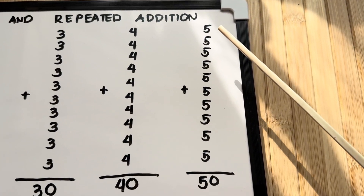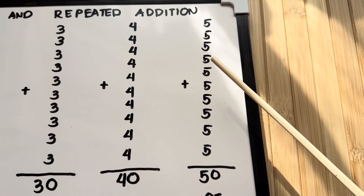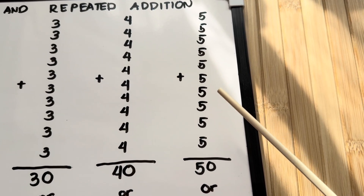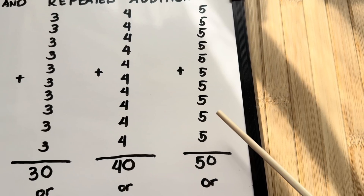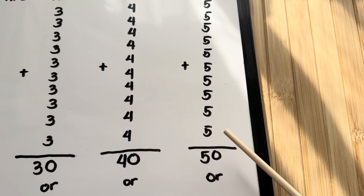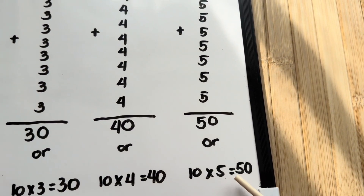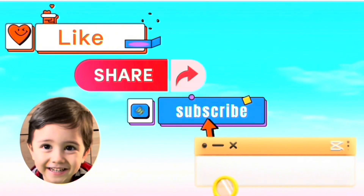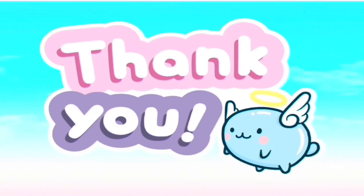And lastly, 5 plus 5 plus 5 plus 5 plus 5 plus 5 plus 5 plus 5 plus 5 plus 5 is equal to 50. Or, 10 times 5 is equal to 50. Thanks for watching and please don't forget to like, share and subscribe to our channel Hello George for more videos. Thank you!